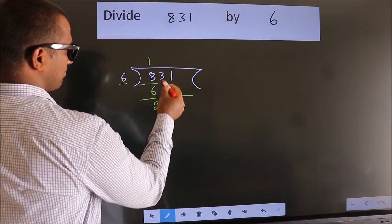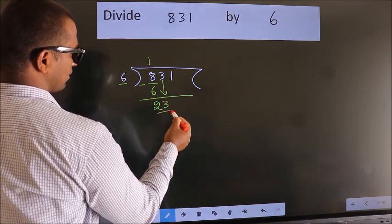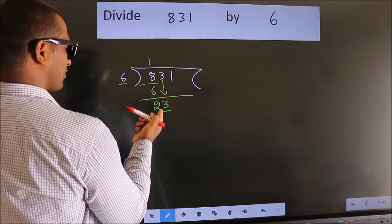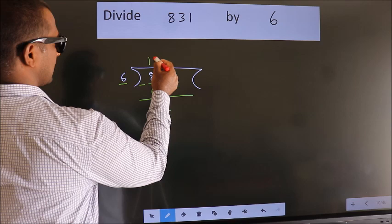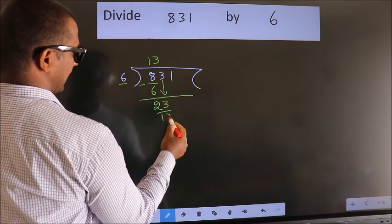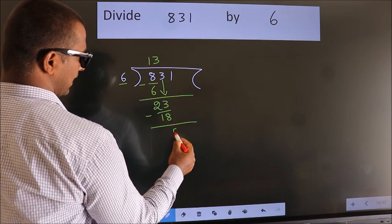After this, bring down the beside number. So, 3 down. So, 23. A number close to 23 in the 6 table is 6×3=18. Now we subtract. We get 5.